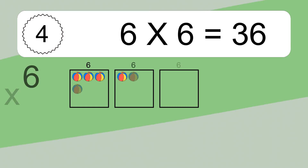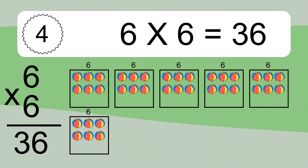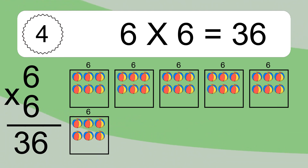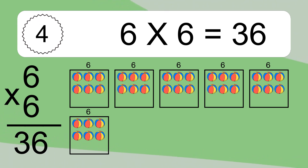6 times 6 equals what? 6 times 6 equals 36. We have 6 boxes and each box has 6 colorful balls inside. If you count all the balls in all the boxes together, you will have 6 times 6 balls. This equals 36 balls.